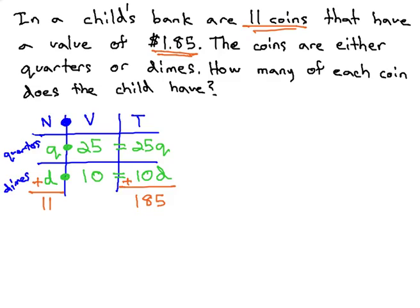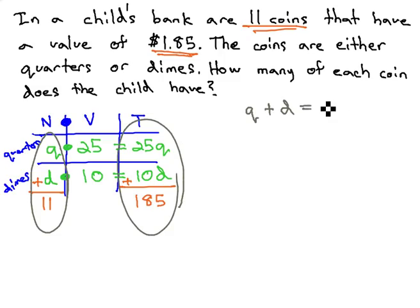Notice, the first and last column now can become two equations. Quarters plus dimes equals 11, and 25 quarters plus 10 dimes equals 185.